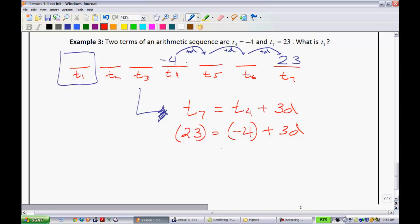And, of course, we're looking to figure out what these three differences add up to. So, just basic algebra. I'll add 4 to both sides. That means we get 27 is equal to 3d. And lastly, d is equal to 9.